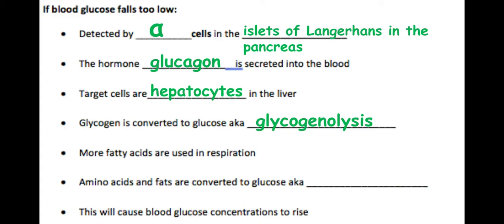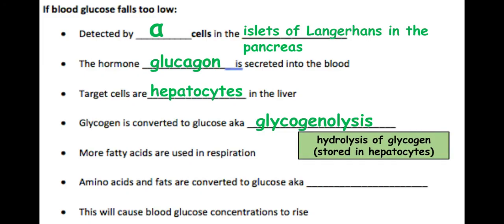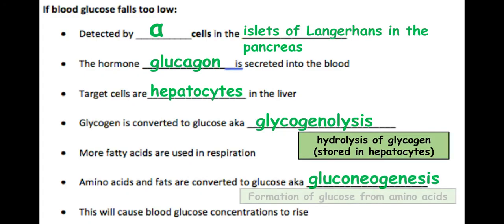Additionally, more fatty acids will be used in respiration, and amino acids and fats can be converted into glucose through a process known as gluconeogenesis. All of these different processes cause blood glucose concentration to rise back within the blood.